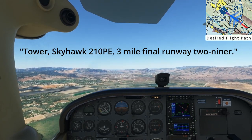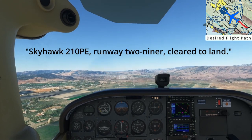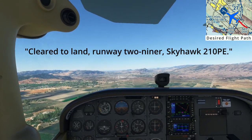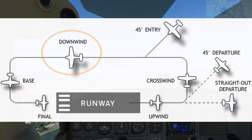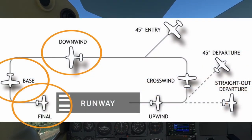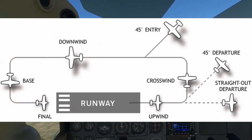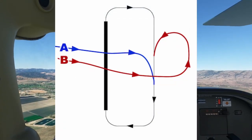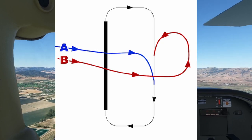We report: "Tower, Skyhawk 210 Pop Echo, 3-mile final runway 29er." Tower responds: "Skyhawk 210 Pop Echo, runway 29er, cleared to land." In conclusion, the downwind, the base leg, and the final leg are the most commonly instructed points at which you will enter the traffic pattern at a towered airport. While these are the most common, you always need to be ready for non-standard instructions — such as making a 270-degree turn, or even a full 360 if the tower needs it for spacing.